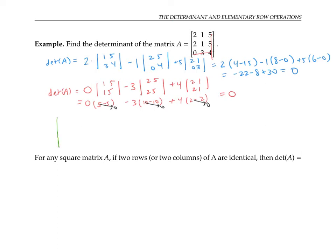In fact, if we had a four-by-four matrix with two rows the same — say the first and the fourth — and we expand on some row that's not the first or the fourth, those three-by-three sub-matrices we take determinants of would have two rows the same, so they would all have determinant zero, making the ultimate determinant zero as well. Using an inductive argument going up one dimension at a time, we can see that for any square matrix A, if two rows of A are identical, then the determinant of A must be zero. The same holds if two columns of A are identical.